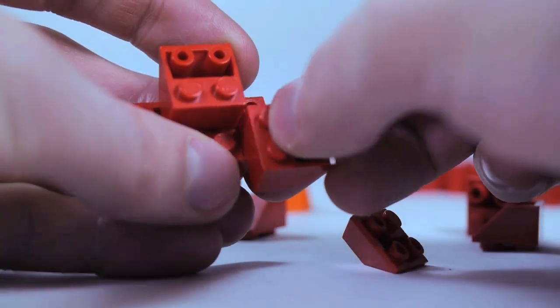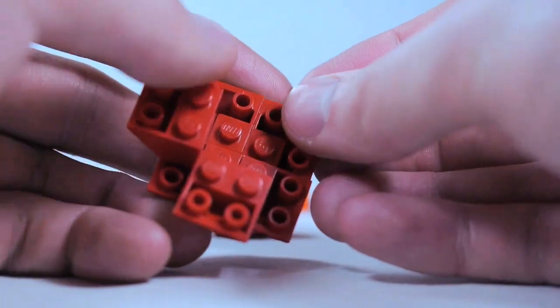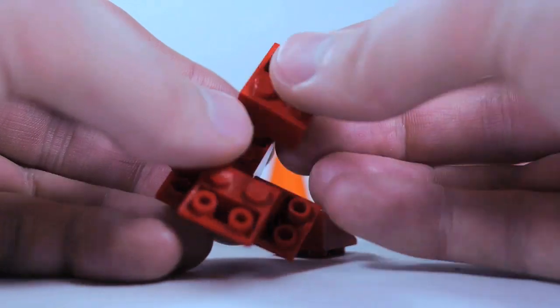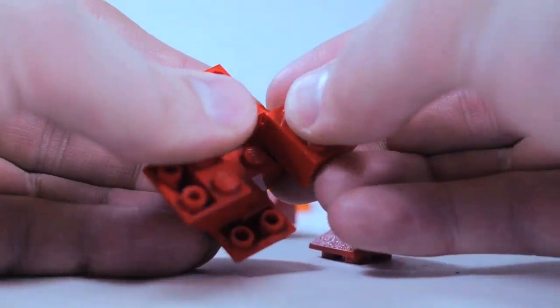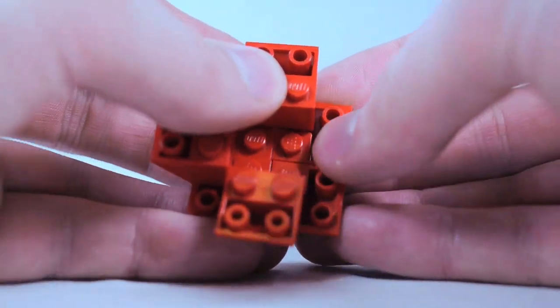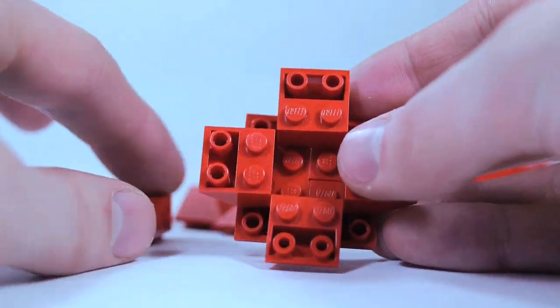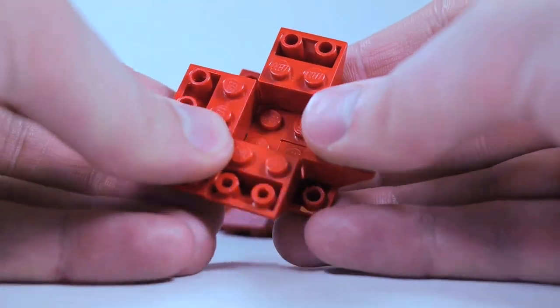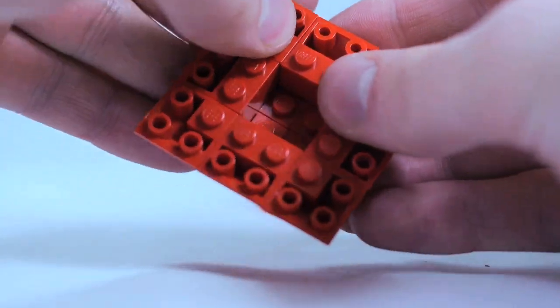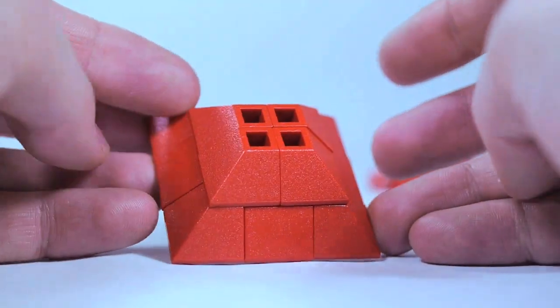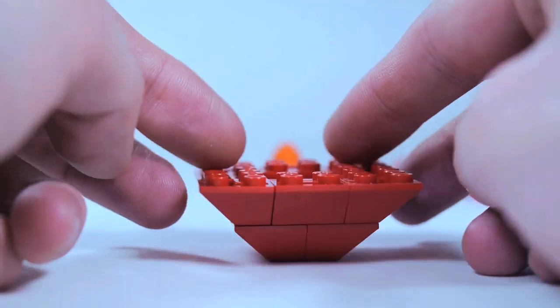So we're going to connect four of those corner slopes at the bottom with some upward slopes in between. So build them together like that and then do the corner slopes. Obviously this relies on you having a lot of these red slope pieces, but since they're used for so many roofs, hopefully you've got some.